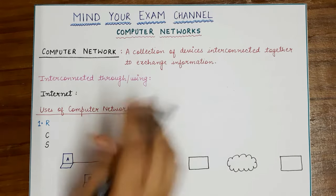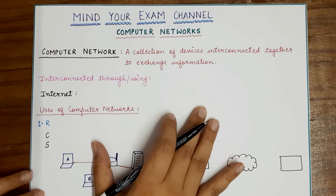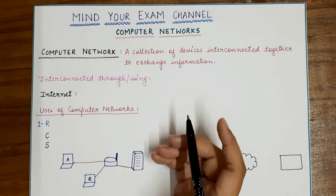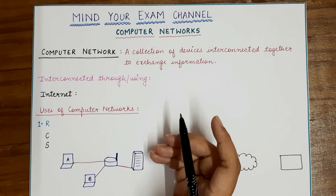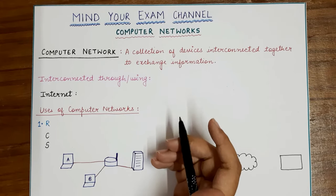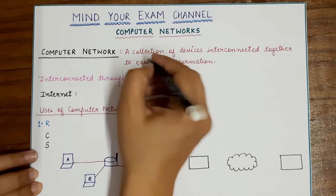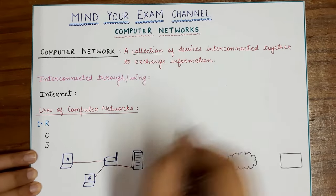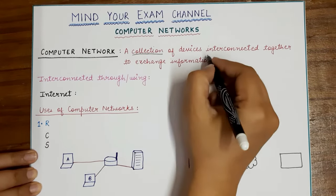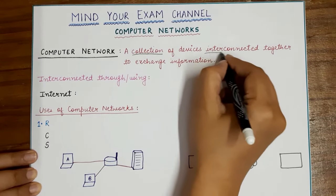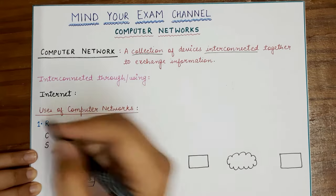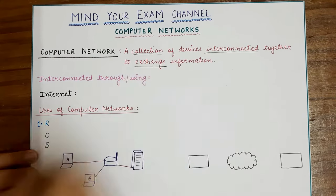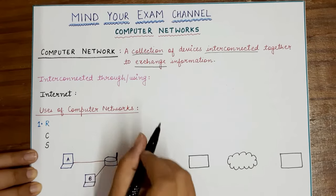Starting with: what is a computer network? Before studying computer networks, you must know what a network or a computer network is. A computer network is a collection of devices — digital devices which are interconnected together so that they can exchange information. These are the three important words that you need to remember.